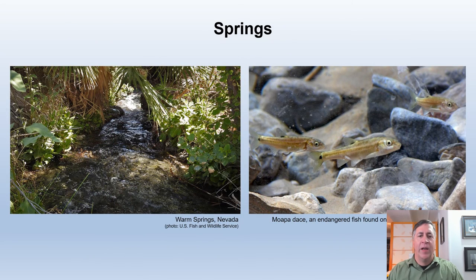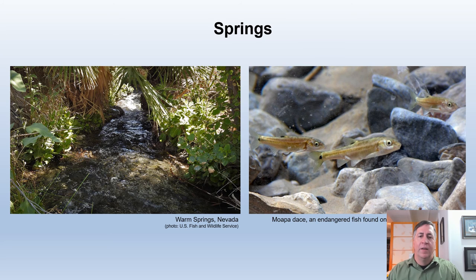In arid or semi-arid regions, groundwater-fed seeps and springs are biodiversity hotspots. Many contain rare species, like the Moapa Dace shown here. Some springs may provide stable hydrologic refugia during droughts and are critical to fish and other water-dependent species. They also provide sources of water and food for nearby wildlife. The groundwater source must be protected for these springs to persist, and native vegetation protected or restored.